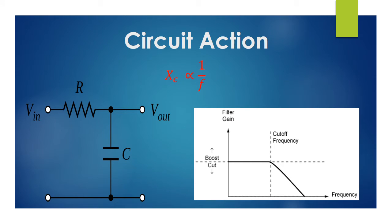In a low-pass filter circuit, we connect a resistor and capacitor — but the arrangement is very important. When designing a low-pass filter, we connect a frequency generator providing variable frequency. First we connect the resistor in series, then the capacitor. The output voltage is taken across the capacitor — that is, in parallel with the capacitor — so whatever signal appears across the capacitor is our output.